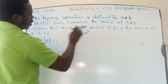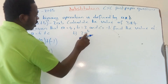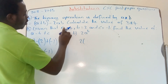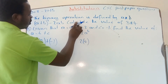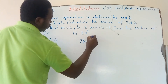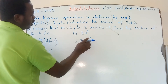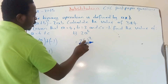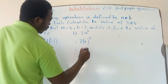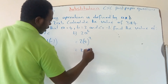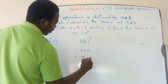We are also asked to find the value of 2a raised to the b power. So this is 2 times a, where a is 4, raised to the b power where b is 2. 4 squared is 16, so this is 2 times 16 which equals 32.